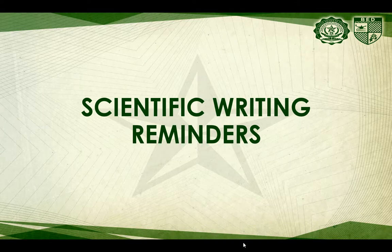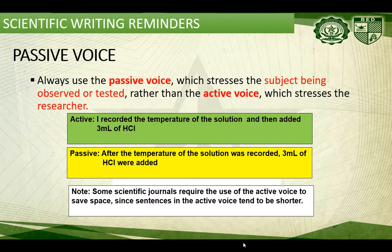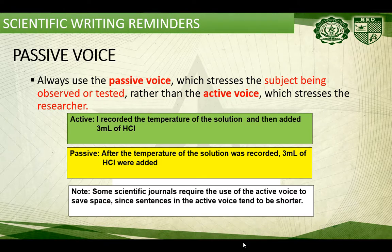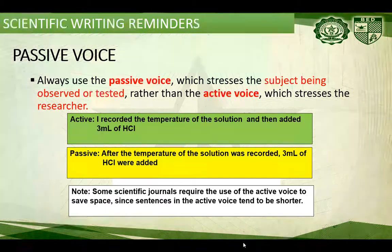Now let's discuss scientific writing reminders. Scientific writing must be in passive voice. Always use the passive voice, which stresses the subject being observed or tested, rather than the active voice, which stresses the researcher. For example, the correct passive statement is: 'After the temperature of the solution was recorded, 3 mL of HCl were added.' Note: some scientific journals require the use of the active voice to save space, since sentences in the active voice tend to be shorter.